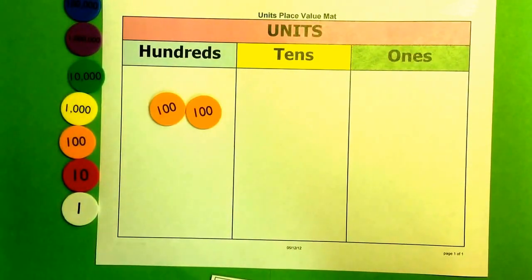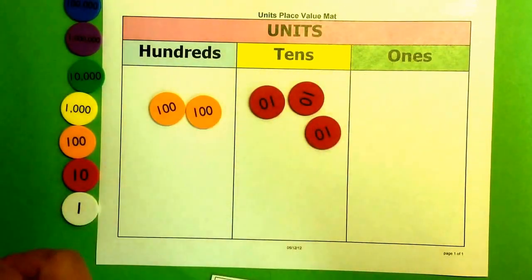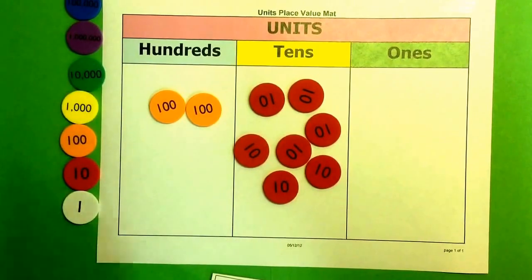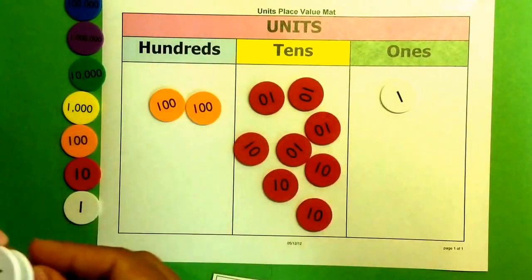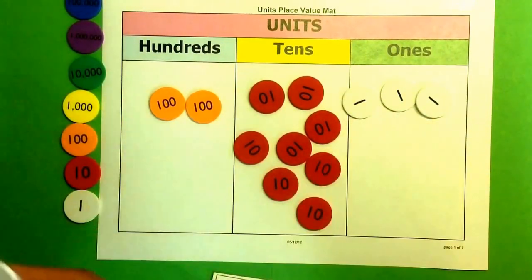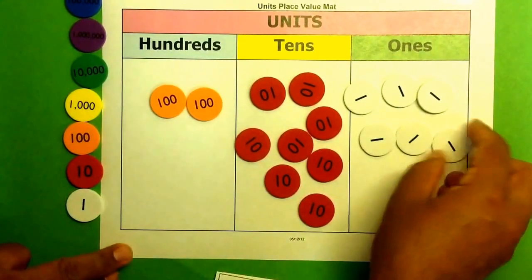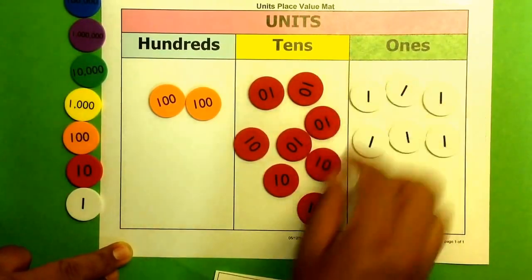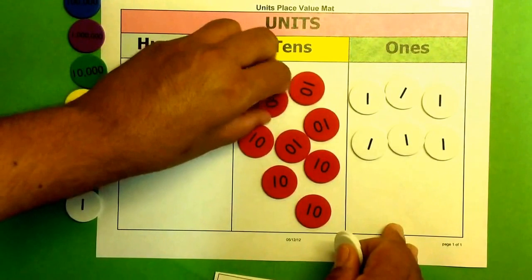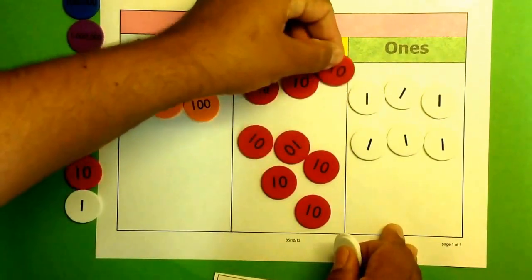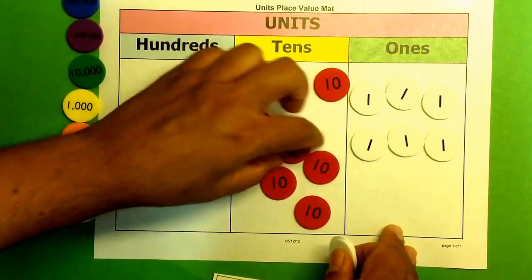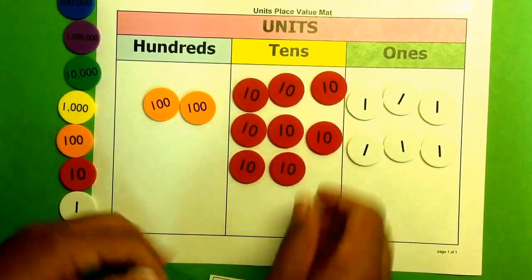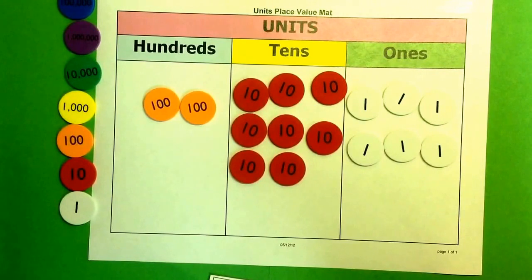There's 200, 80. So the student can represent 286 using the concrete objects of place value disks. And then you can have them do a pictorial representation in their journals or if you handed out a sheet or if you have a laminated sheet for them to work on if this is a workstation.